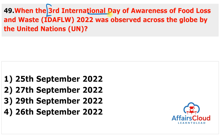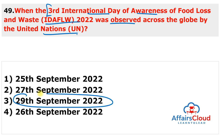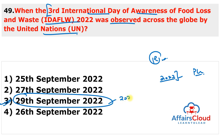The third International Day of Awareness of Food Loss and Waste 2022 was observed on 29th September 2022 to raise awareness about reducing food loss and waste. The global event focuses on 'Stop Food Loss and Waste for People and the Planet.' The first International Day of Awareness of Food Loss and Waste was observed in 2020, making this the third observance.